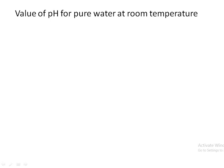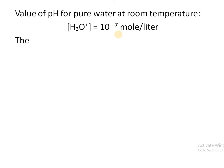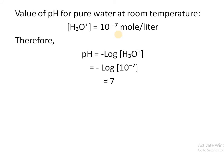The value of pH for pure water at room temperature: water is neutral in nature. A neutral solution has a hydronium ion concentration of 10 raised to power minus 7 moles per liter. Using the formula pH equals negative log of hydronium ion concentration and substituting this value, we get a pH value of 7, meaning pure water has a pH of 7 and is neutral.